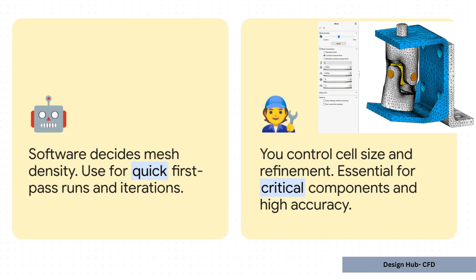But, and this is a big but, for results that you can actually trust, results you'd bet your job on or base a major design decision on, you have to switch to manual. Manual mode is where you, the engineer, bring your expertise to the table and guide the solver to get the accuracy exactly where it matters most.